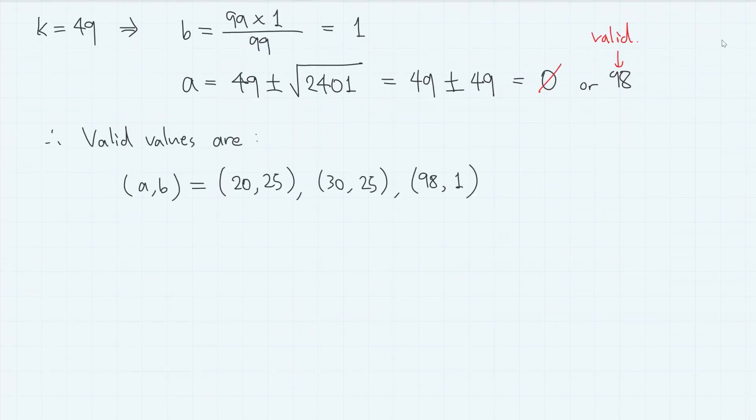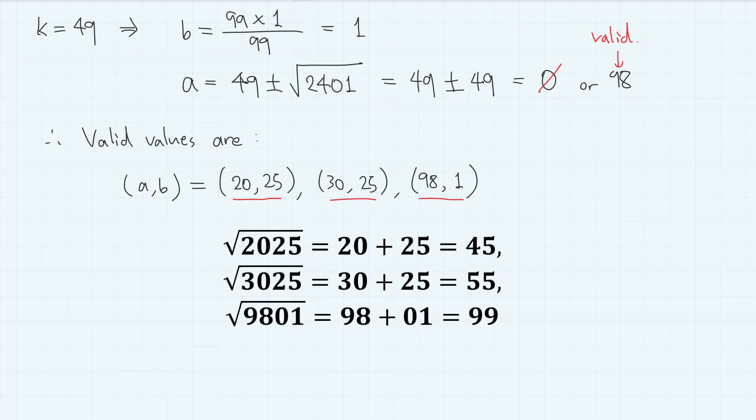Therefore, the possible pairs of (a, b) are (20, 25), (30, 25), and (98, 1). Which corresponds to 3 cases: square root of 2025 equals 20 plus 25, square root of 3025 equals 30 plus 25, and square root of 9801 equals 98 plus 01.